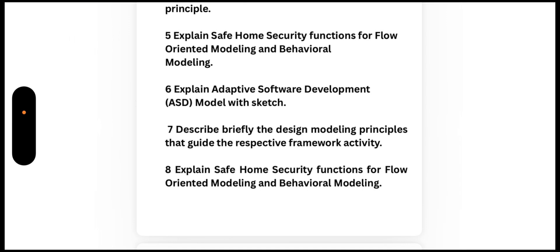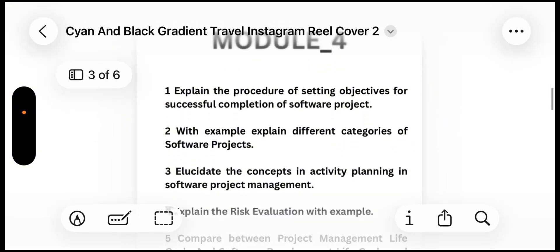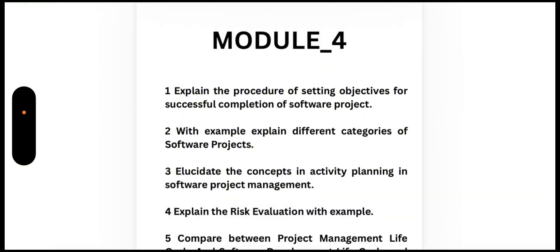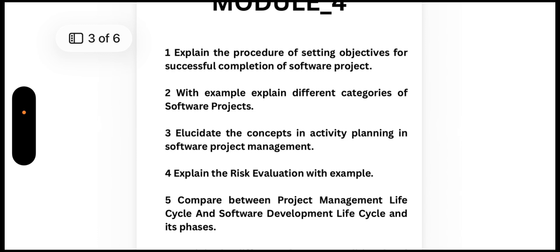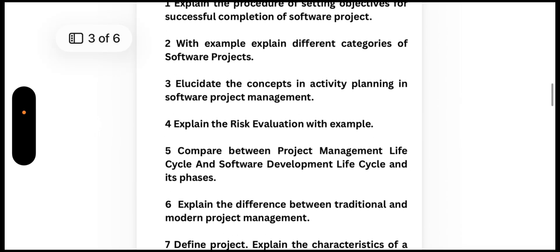For Module 4: First, explain the procedure of setting objectives for successful completion of a software project with examples. Second, explain different categories of software projects. Third, elucidate the concepts in activity planning in software project management. Fourth, explain risk evaluation with an example — a super important question. Also, compare between project management life cycle and software development life cycle and its phases.